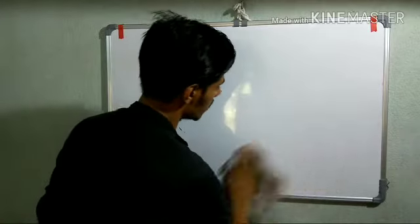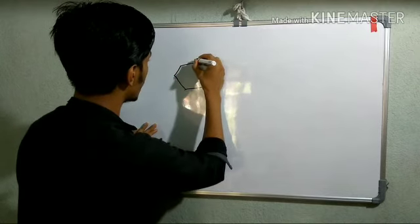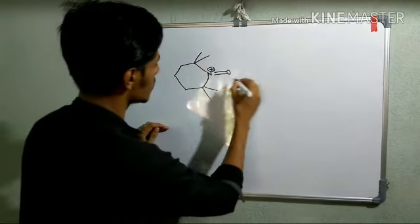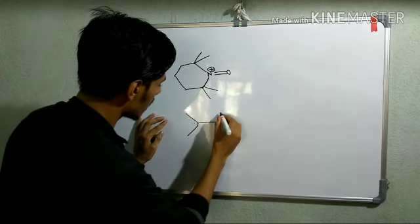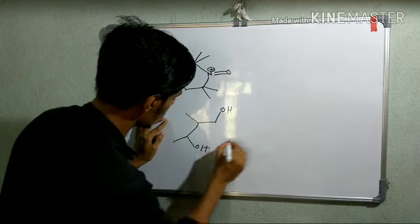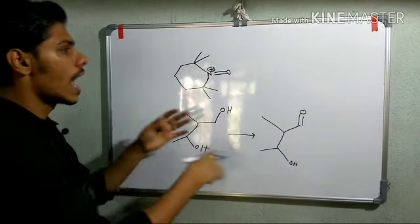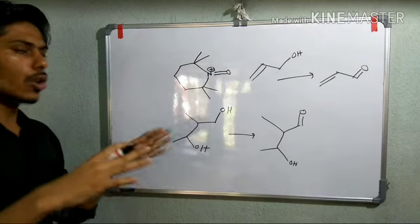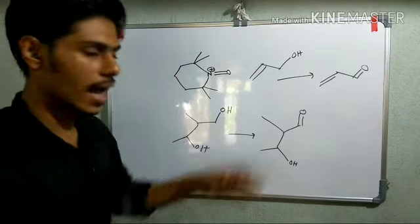TEMPO is another very useful oxidizing agent, based on a tetramethyl nitroxide radical structure. Its role is similar to DMP — it can oxidize the primary alcohol in the presence of a secondary alcohol, leaving the secondary unreacted. TEMPO is also very useful for oxidizing allylic positions. In all these cases, you will not get carboxylic acid; the reaction stops at the aldehyde or ketone stage.